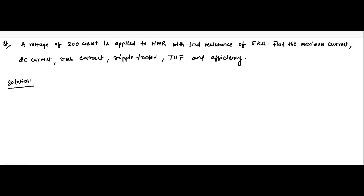Hello friends, welcome to engineering tutorial. Here is another question on half wave rectifier. The question is that a voltage of 200 cos omega t is applied to a half wave rectifier with a load resistance of 5 kilo ohm. Find the maximum current, DC value of the current, RMS value of the current, ripple factor, TUF — which stands for transformer utilization factor — and efficiency.